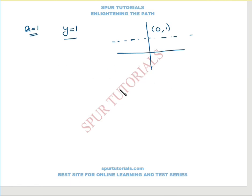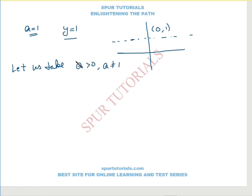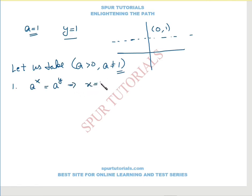Now let us see some basic properties. Let us assume a greater than 0 and a not equal to 1. The first basic property is: if a raised to power x equals a raised to power y, then this implies x equals y.